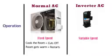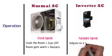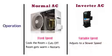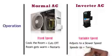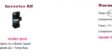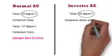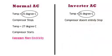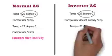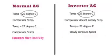In inverter air conditioners, the compressor runs at a variable speed, which means it adjusts to a slower speed when the desired temperature is achieved, and speeds up when the temperature rises. For example, if you set 25 degrees and it is achieved, the compressor doesn't entirely stop but maintains a minimum speed, and when the temperature rises to 26 degrees, it slowly increases speed and brings it back to 25 degrees.